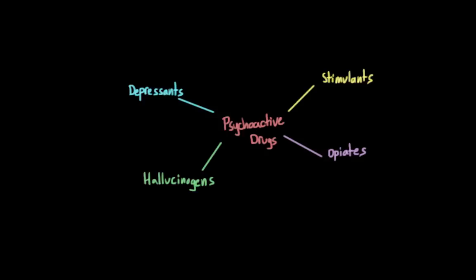Drugs that are classified as depressants depress our central nervous system functions, so they decrease the level of arousal or decrease the level of stimulation in certain areas of our brain. They decrease our heart rate, lower blood pressure, slow our breathing. They can cause dizziness and lack of coordination. Importantly, they lower our processing speed, which can affect how we interpret and react to the things going on around us, causing us to think and act more slowly.